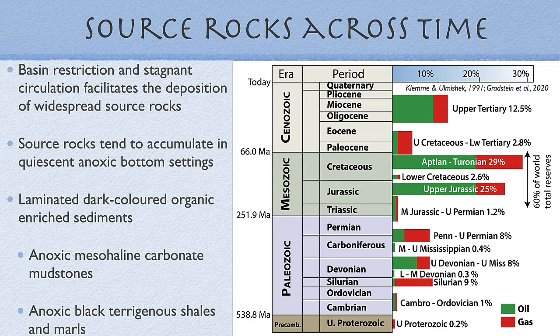Because they are anoxic, there's little bioturbation, and so we tend to preserve laminated, relatively dark-coloured, organic-enriched sediments — true of both anoxic mesohaline carbonate mudstones and anoxic alumino-silicate black pterygina shales and marls. We can see that there are six major intervals where source rocks have produced significant volumes of hydrocarbons, and together those six constitute the source for more than 90% of the world's discovered reserves of oil and gas.